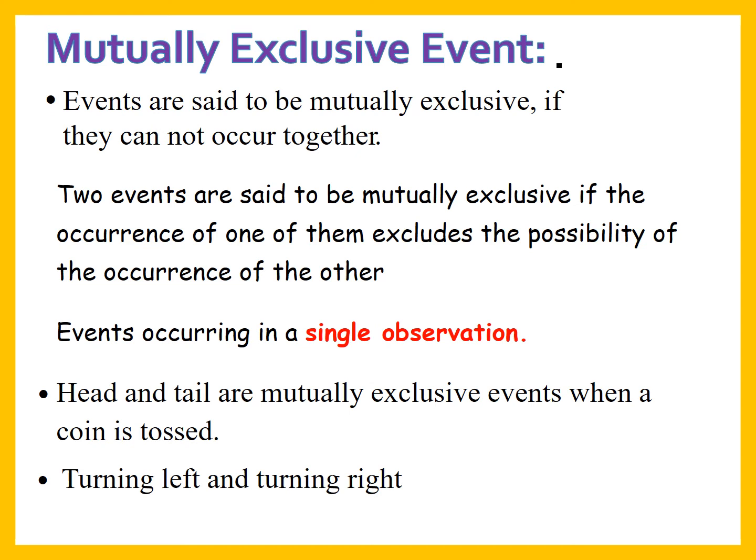For mutually exclusive events, the addition rule is applicable. Events are said to be mutually exclusive if they cannot occur together. Two events are mutually exclusive if the occurrence of one of them excludes the possibility of the occurrence of the other.